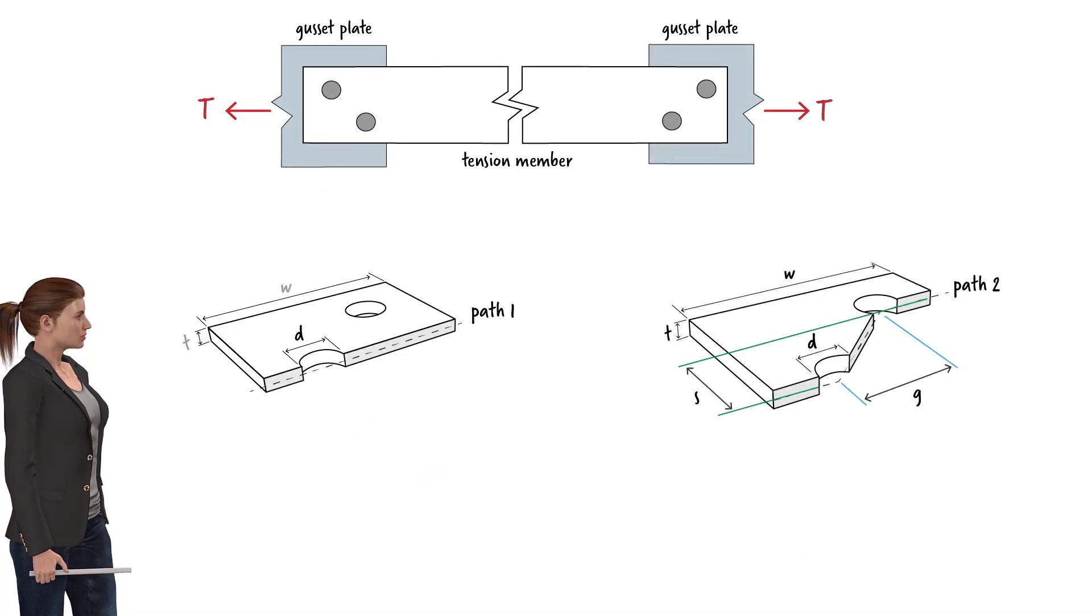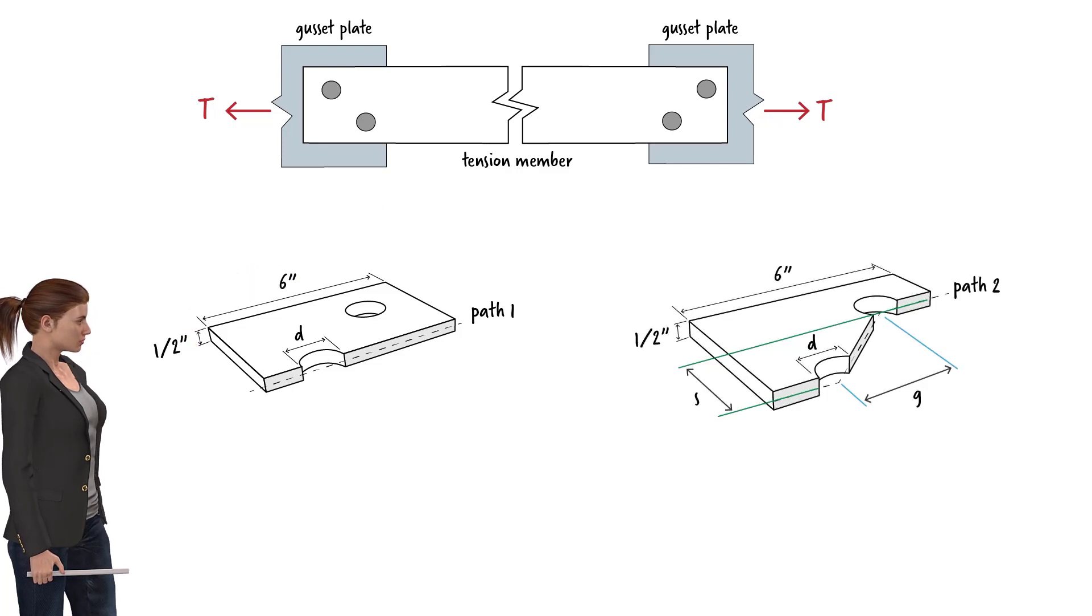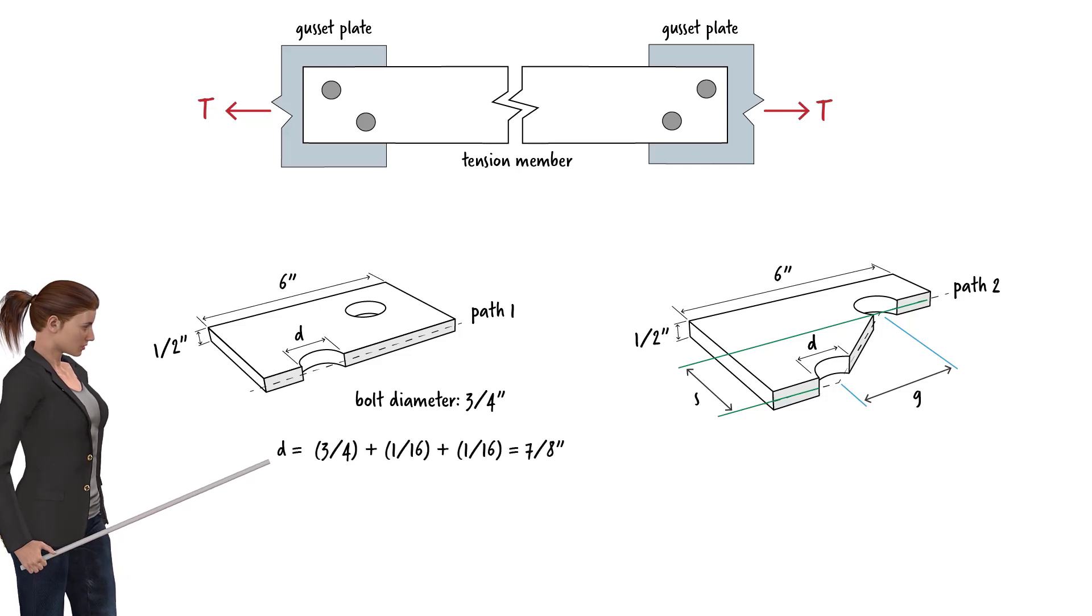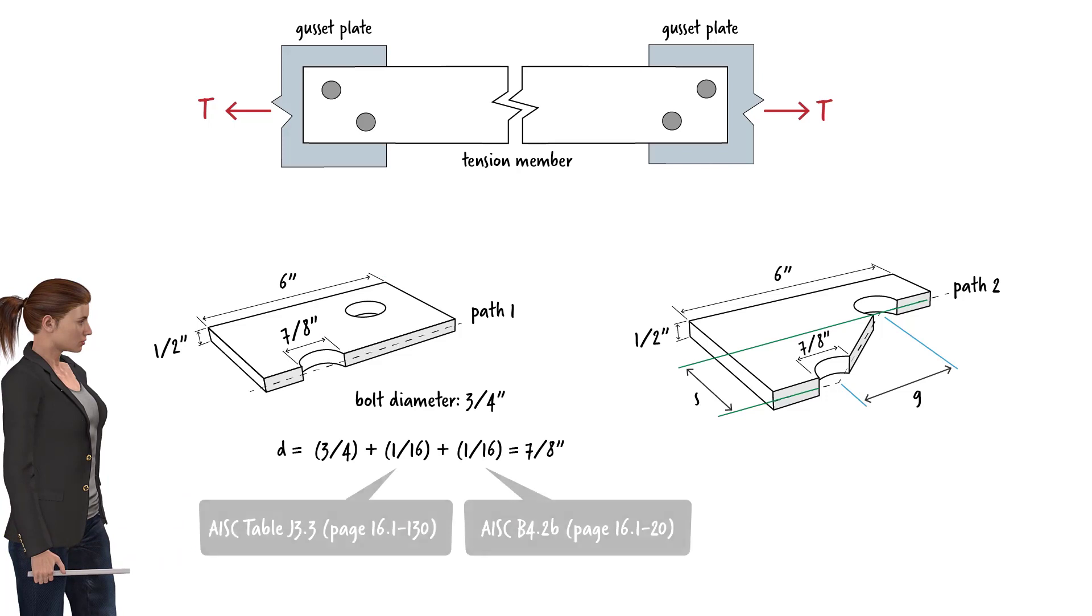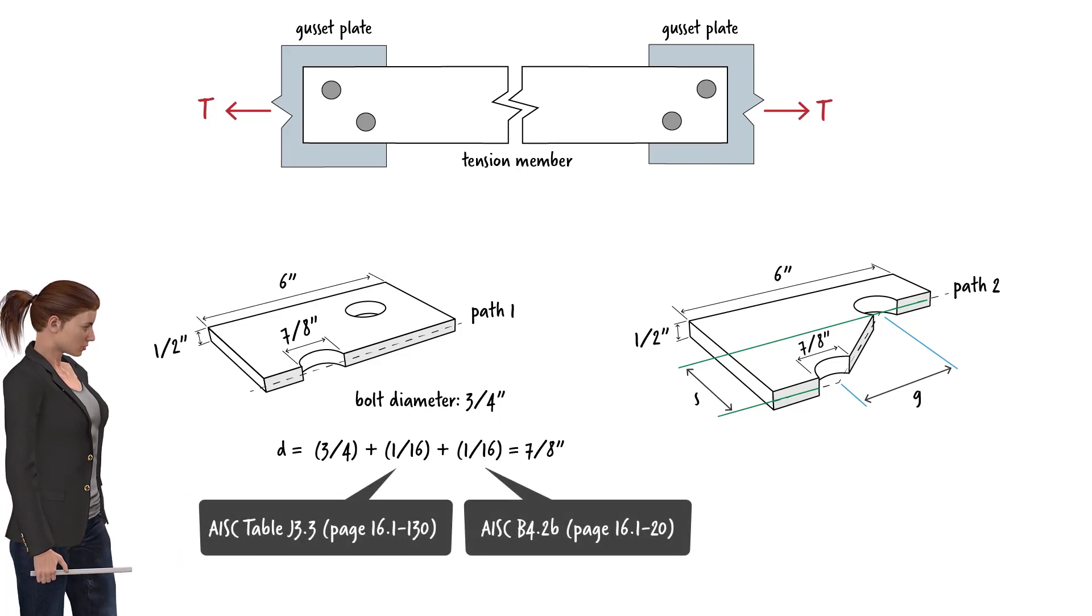Suppose the plate has a width of 6 inches and a thickness of half an inch, and the holes are made for 3 quarter inch bolt diameter. Therefore, the effective hole diameter equals 3/4 plus 1/16 plus 1/16, or 7/8 of an inch. See the previous lectures to learn why we need to add these additional fractions to the bolt diameter to arrive at the effective hole diameter.